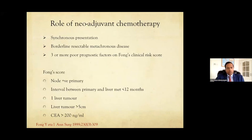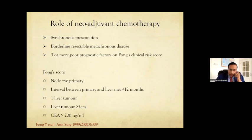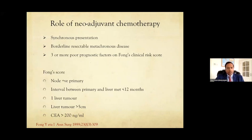The definition we use for synchronous is six months from diagnosis of the primary. Borderline resectable metachronous disease — if you're struggling with an inadequate FLR for upfront resection, or a lesion close to inflow or outflow requiring substantial normal liver sacrifice, go for neoadjuvant chemo. The third indication is three or more Fong criteria risk factors: node-positive primary, short interval between primary and liver met, number and size of liver mets, and CEA value. With three or more, you have poor prognostic factors and want systemic disease control before resecting what remains.